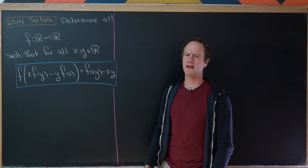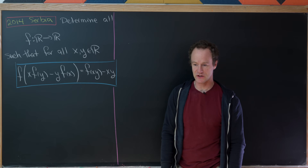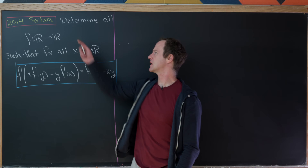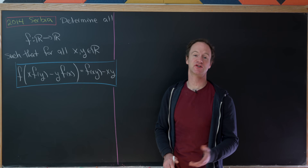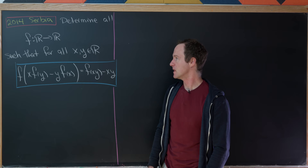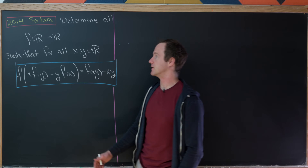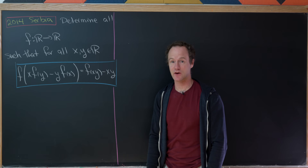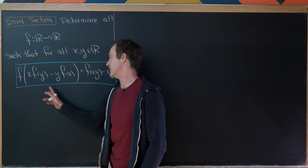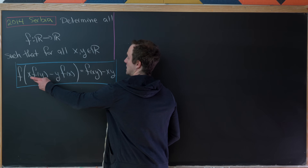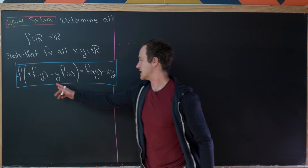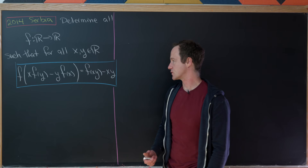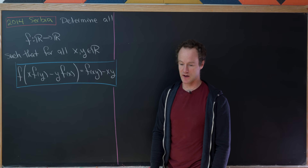Today we're going to look at what I think is a pretty nice functional equation for functions on the real numbers. It comes from the 2014 Serbian Math Olympiad. Our goal is to find all functions from ℝ to ℝ such that for all real numbers x and y, f(x)·f(y) − y·f(x) = f(xy) − xy.